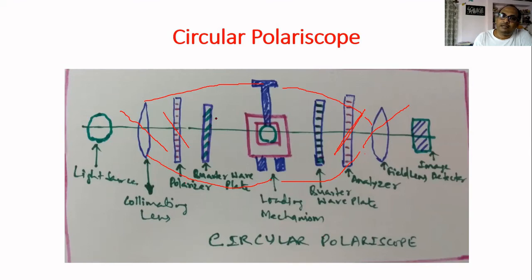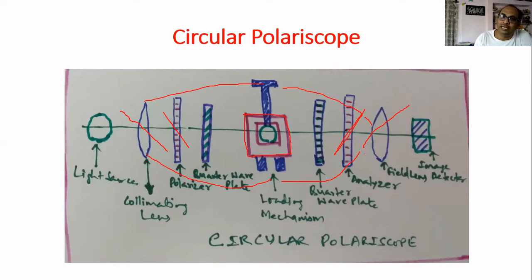In the circular polariscope, the isochromatic and isoclinic fringe patterns are separated. Isochromatic — the most important pattern — gives you the magnitude of shear stress, whereas isoclinic gives merely the direction of shear stress. In the plane polariscope, both are mixed together, so there is a need to separate them — that is one additional task involved there.